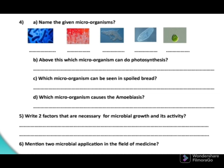Let's go to the fifth question: write two factors that are necessary for microbial growth and activity. We know moisture conditions and temperature are very suitable conditions for the growth of microorganisms. That's why we use refrigerators to control the temperature of stored food. If we keep food in the refrigerator, we can protect the food's nutrition and structure from microbial activity.